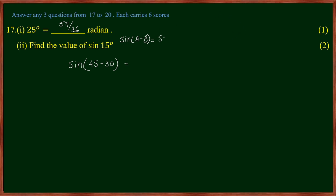Sin(A - B) = sin A cos B minus cos A sin B. So sin(45° - 30°) = sin 45° cos 30° minus cos 45° sin 30°.